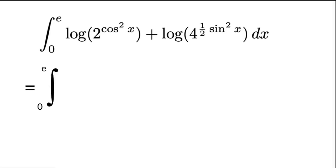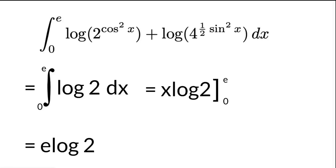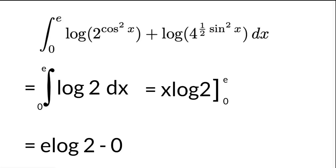Now, let's try and simplify this integral from 0 to e. This integral will now be equal to the integral of log of 2 dx, which will be equal to x log 2 computed at the intervals 0 to e. This will be equal to e log 2 minus 0 log 2, which simplifies to e log 2, which is our final solution.